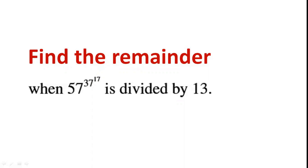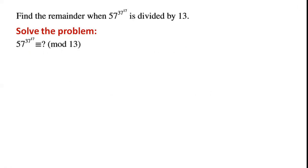Find the remainder when 57 to the power of 37 to the power of 17 is divided by 13. Finding the remainder is equivalent to finding what this number is congruent to mod 13. First, we look at a simpler case. We know that 57 is congruent to 5 mod 13.